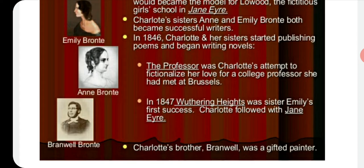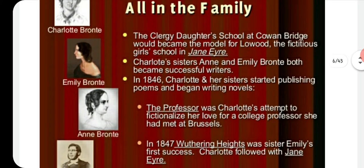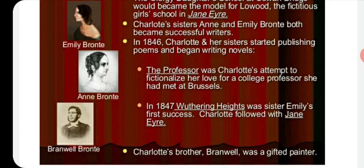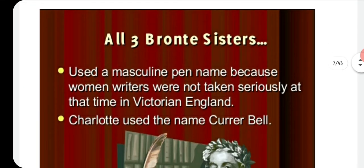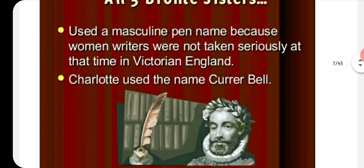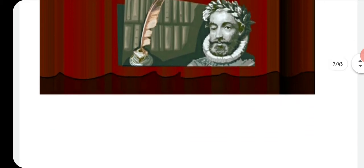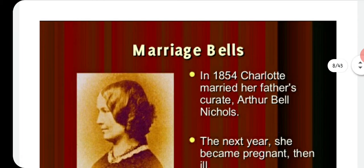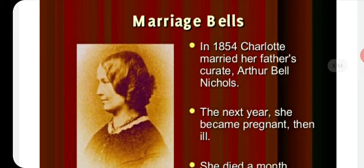Charlotte's brother Branwell was a gifted painter and painted pictures of the three Brontë sisters. The three Brontë sisters who were writers used masculine pen names because women writers were not taken seriously in Victorian England. Charlotte used the pen name Currer Bell, a name she described in various pieces of her writing.